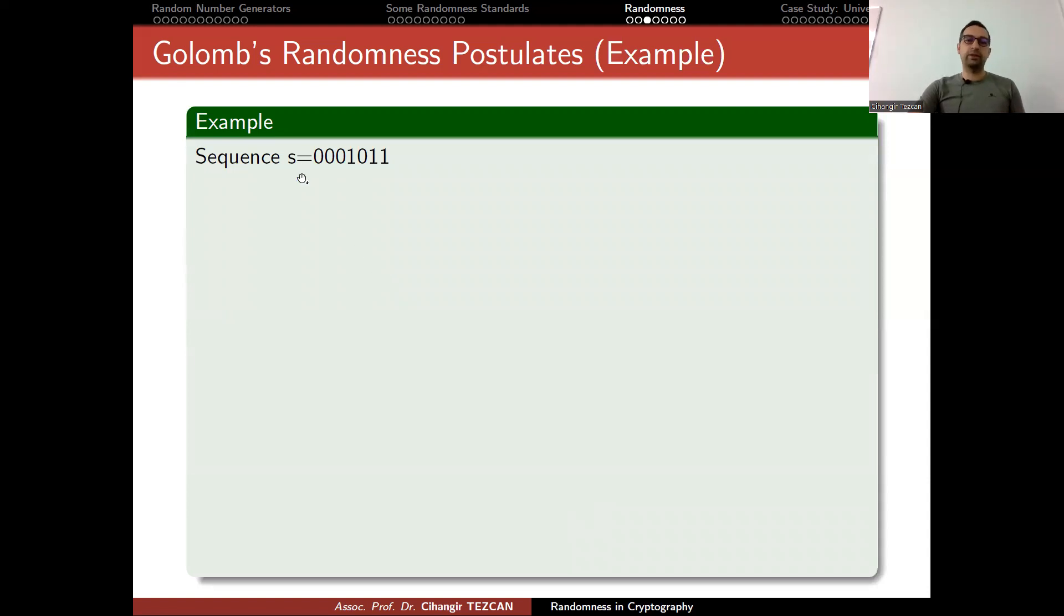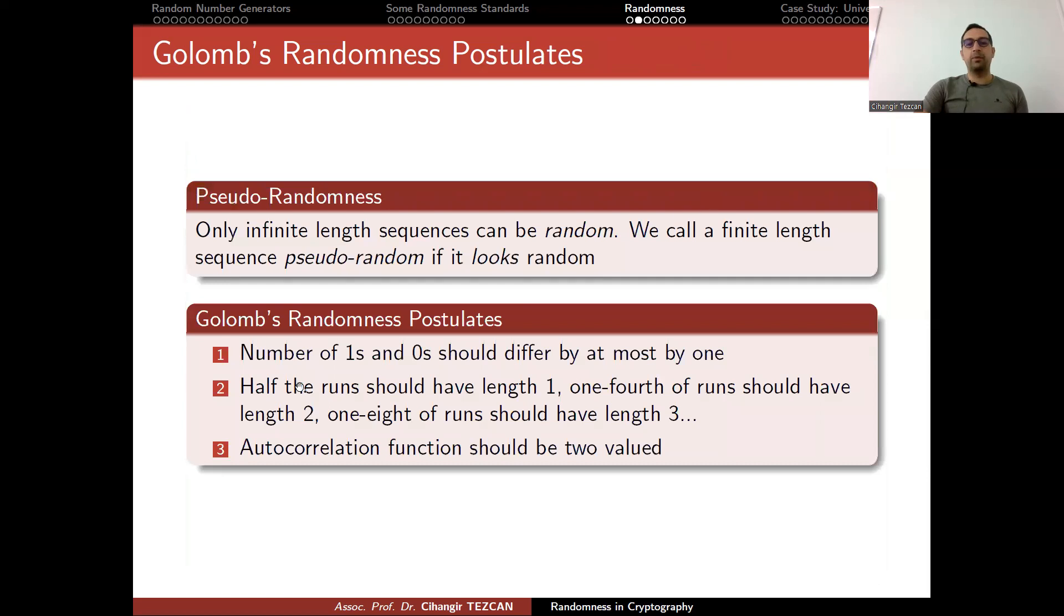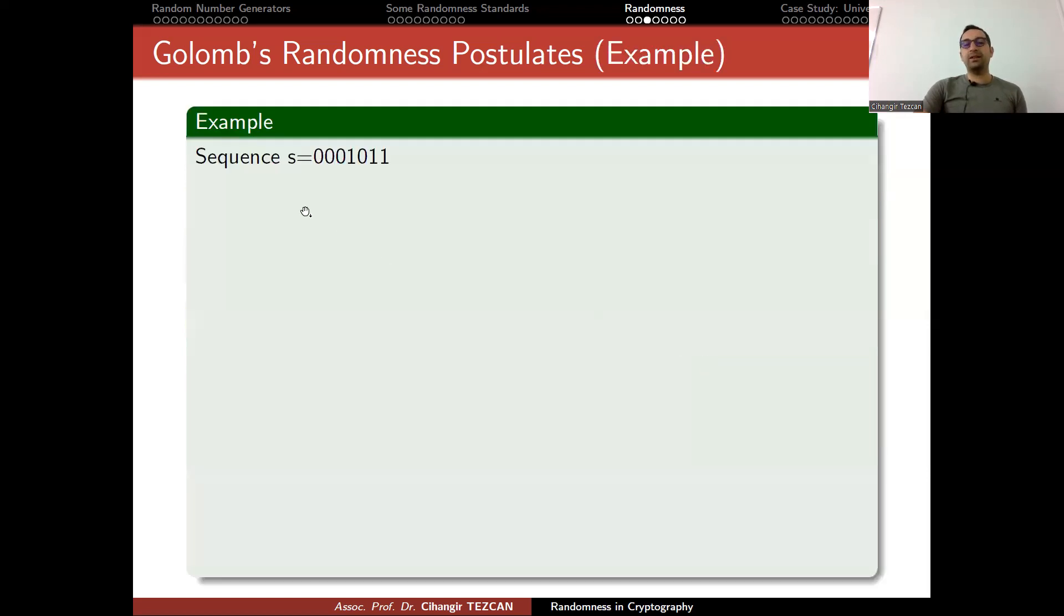Let's look at the sequence. This sequence has seven bits. I chose something very short to easily see what is going on. Let's look at the first postulate. There are four 0s in this sequence and three 1s in this sequence. If you look at the difference, it is 1. Golomb's first postulate says that number of 1s and 0s should differ by at most 1. So if your sequence has a length of an even number, then 1s and 0s should be equal. But if it is an odd number, then the difference should be 1. So if we had five 0s and two 1s, it wouldn't satisfy the first postulate. This satisfies the first postulate.